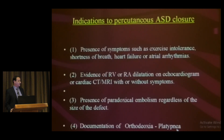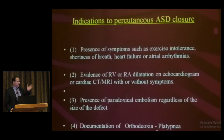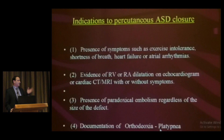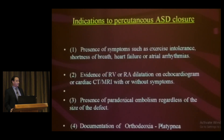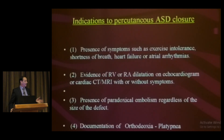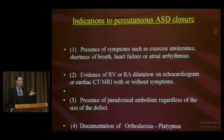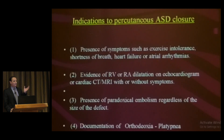Orthodoxia is a Latin word meaning hypoxemia, and platypnea means positional dyspnea. These patients become symptomatic and desaturated when standing, and their saturation normalizes when in the supine position. When standing, the defect stretches and the direction of flow from the IVC goes from the right atrium to the left atrium.